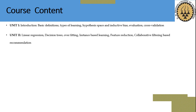We will also see overfitting, which is associated with decision trees, then instance-based learning and feature reduction. A feature corresponds to attributes in a database. At the end of Unit 2, we will see the most vibrant and useful application: collaborative filtering-based recommendation, which is very popular in the e-commerce sector.